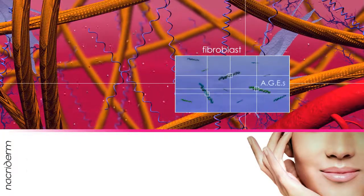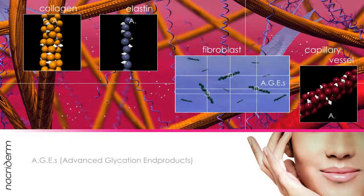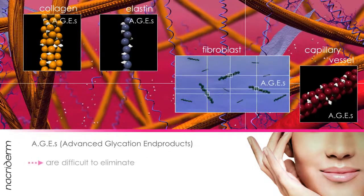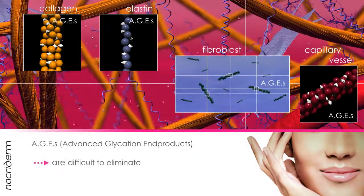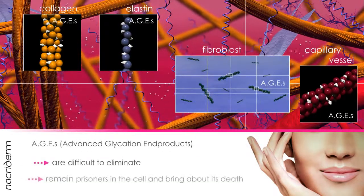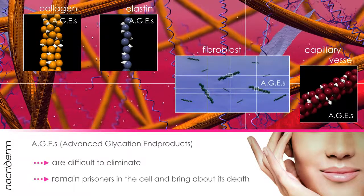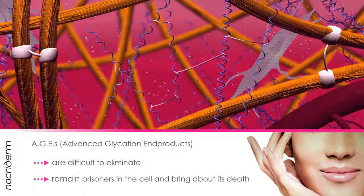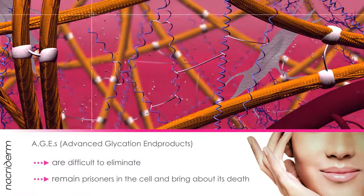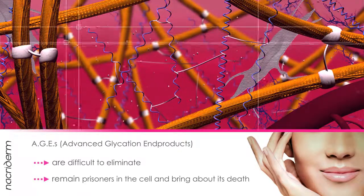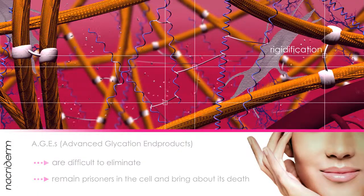AGE — advanced glycation end products resulting from these reactions — are very hard to metabolize. AGE remain prisoners in the cell and bring about its death in more or less the long term.